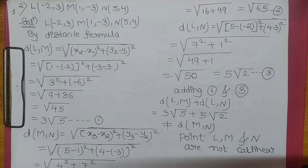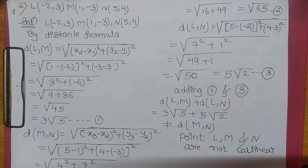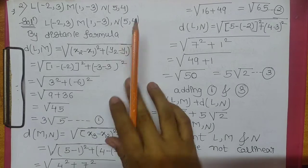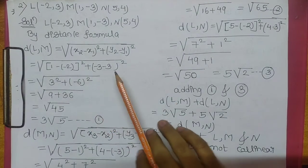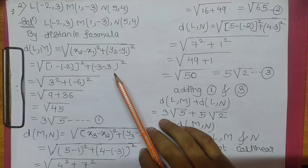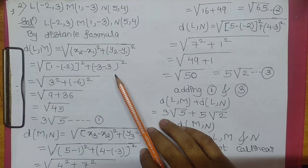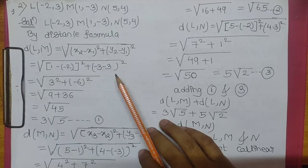Now L is (minus 2, 3), M is (1, minus 3), N is (5, 4). Toh hum inko check karna hai — collinear hai ya nahi hai. Distance find karenge: L M ka distance, M N ka distance, aur L N ka distance.